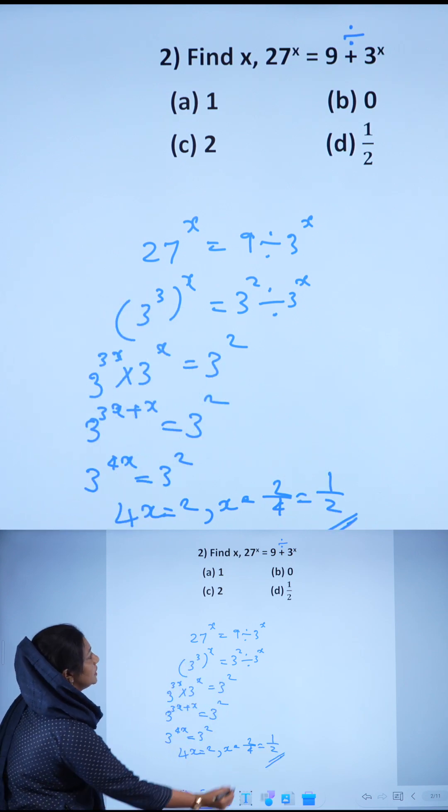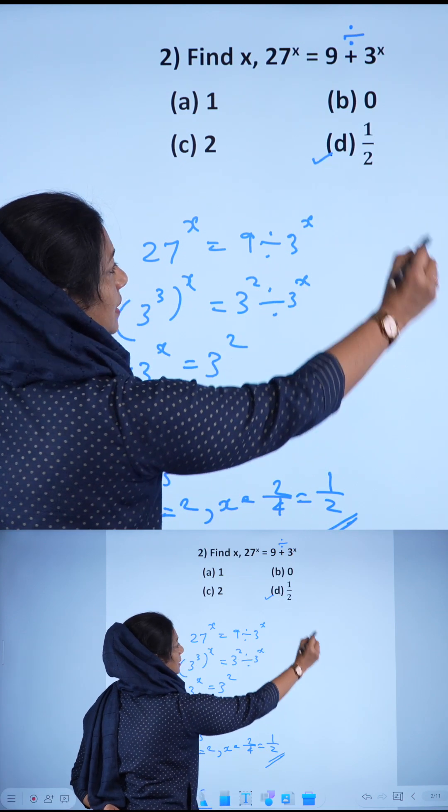So the answer is 1 by 2. The correct answer option is D, 1 by 2 is the correct answer.